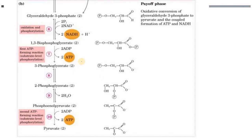Dihydroxyacetone phosphate is converted to glyceraldehyde-3-phosphate. The next step involves oxidation and phosphorylation: NAD+ acts as the electron carrier and is reduced to NADH. The compound is oxidized, expelling hydrogen, which is used for reduction of NAD+. Phosphorylation occurs using inorganic phosphate.